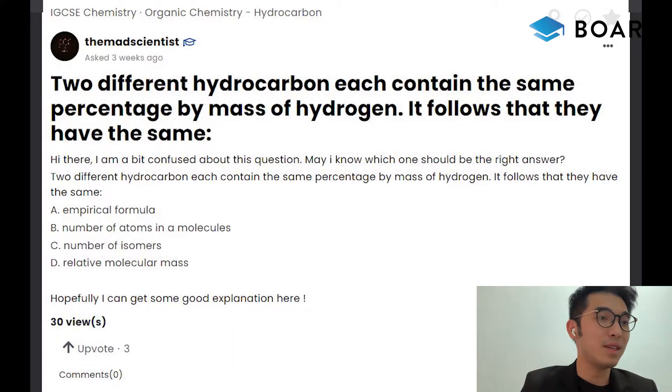Two different hydrocarbons each contain the same percentage by mass of hydrogen. It follows that they have the same... They have four options: empirical formula, number of atoms in a molecule, number of isomers, and relative molecular mass.